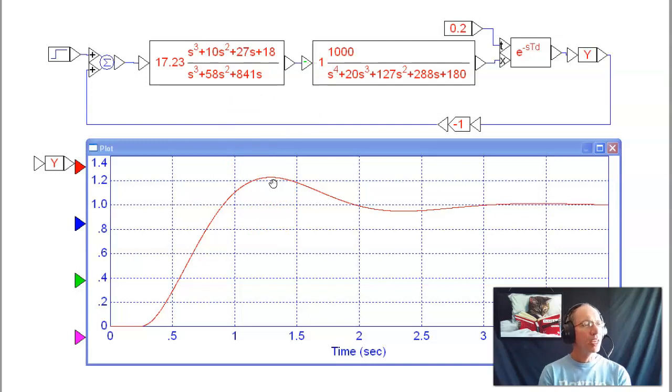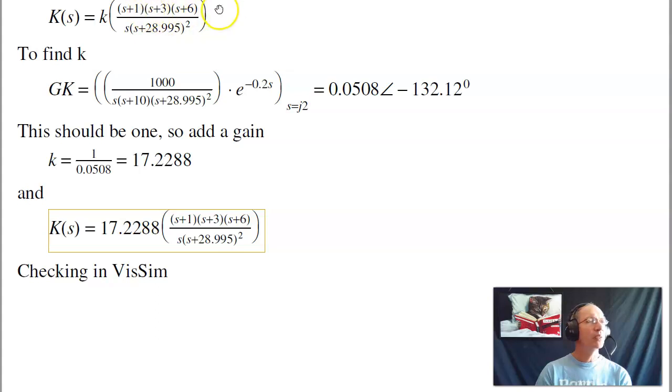So with that, I can now design compensators to meet design specs in the frequency domain. What I wind up with is a fairly complicated system. To implement it, I would just split this up and call it a PI compensator, a lead compensator, and a second lead compensator. With that, I can implement that with an op-amp circuit.